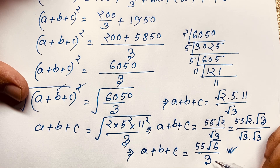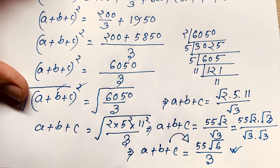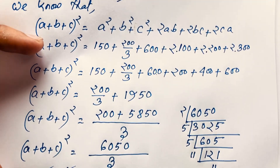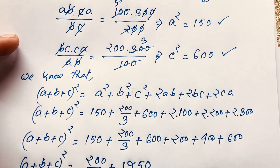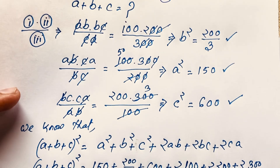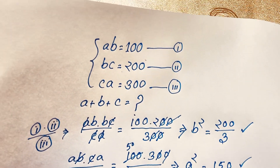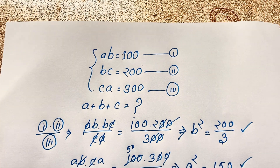A plus B plus C is equal to 55 times the square root of 6 over 3. This is the value. Thank you all. If you enjoy this math Olympiad question, please subscribe to my channel for other interesting videos. Goodbye, take care.